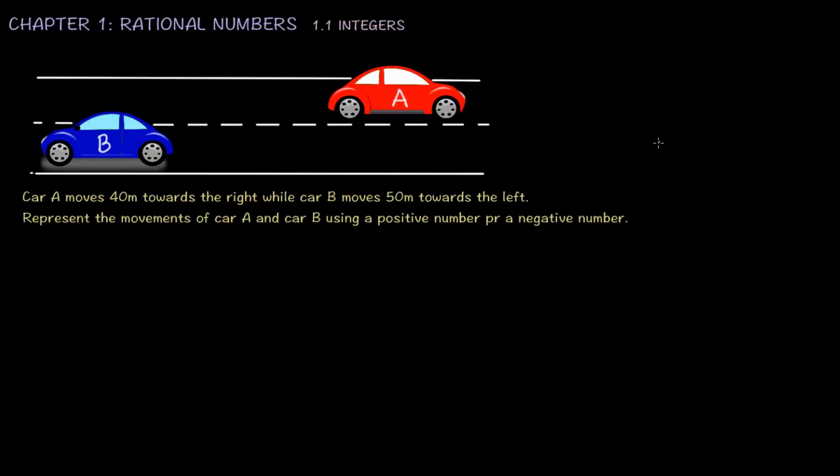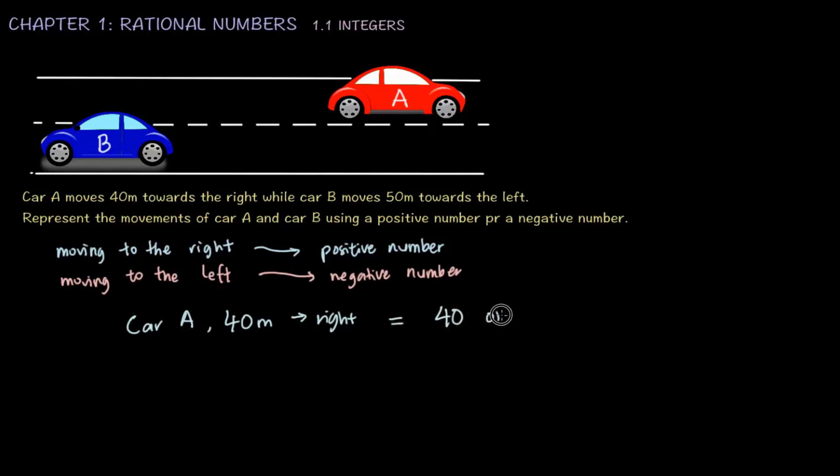Okay, from this example, we can assume that moving to the right is represented with a positive number, while moving to the left is represented by a negative number. Thus, the movement of car A, 40 meters towards the right, is represented as 40 or plus 40. And the movement of car B, which is 50 meters towards the left, is represented as negative 50.